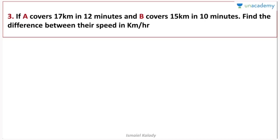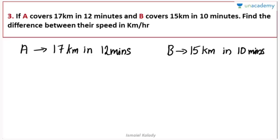If A covers 17 km in 12 minutes, we take the speed. Generally, if A covers 17 km in 12 minutes, we start working on the speed calculation.